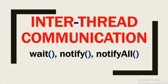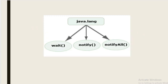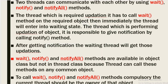Hello, welcome back to this channel 'Gain Java Knowledge'. Today we are going to discuss inter-thread communication — how one thread can communicate with other threads. We will use the wait, notify, and notifyAll methods to perform inter-thread communication. These three methods are present in the java.lang package.